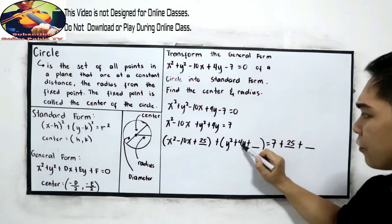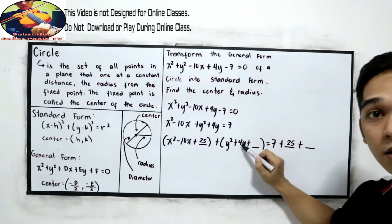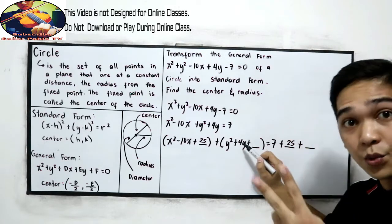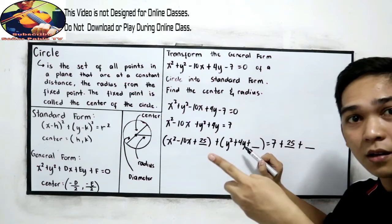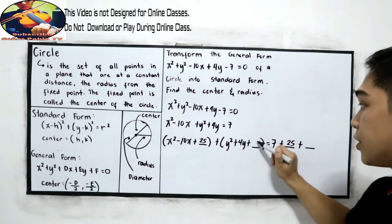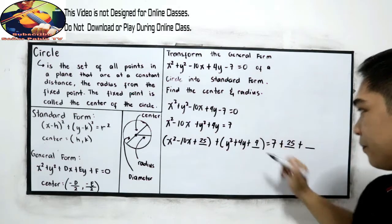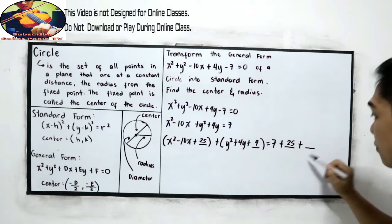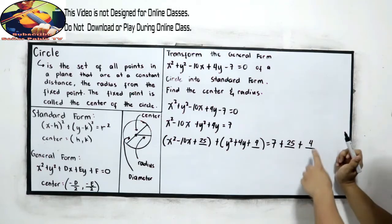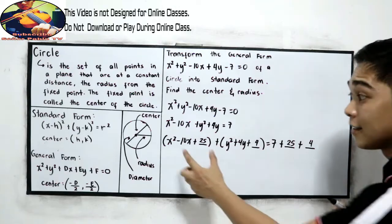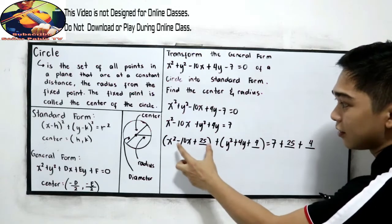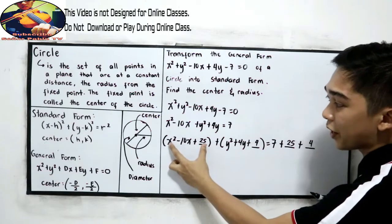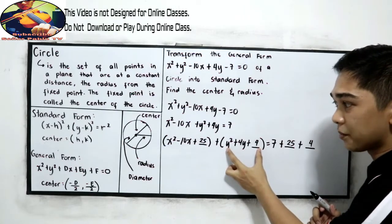Next, for the y terms: 4 divided by 2 is 2, and 2 squared is 4. So we add 4 on the left side and also add 4 on the right side of the equation. Now we have a perfect square trinomial and another perfect square trinomial, and we're going to write each as a square of a binomial.